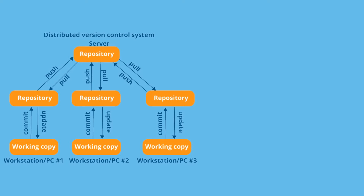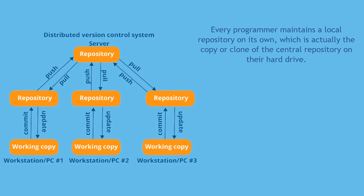Now let's look at the distributed version control system. One extra layer is added, which is the local repository. The local repository and working copy both reside on your laptop or your hard drive, and the server is in your office. Operations done in the working copy — changes, commits, and updates — go to your local repository on your laptop. Every programmer maintains a local repository of their own, which is basically a cloned copy of the server. They can commit and update their local repository without any interference.